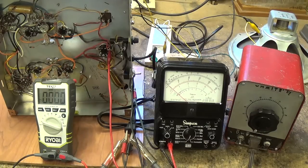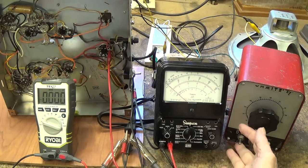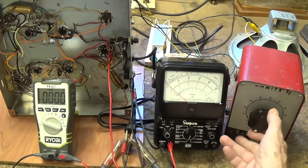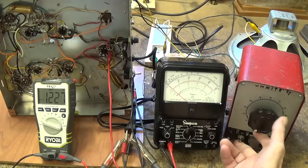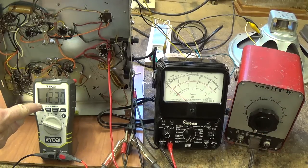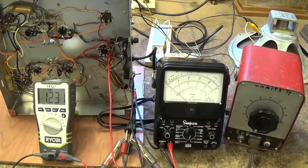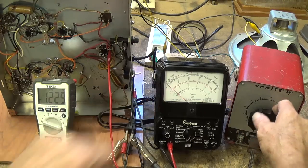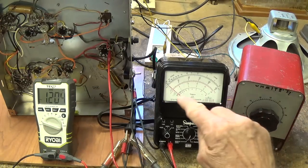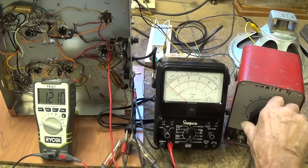Okay, here we are set up with a 5U4. We'll turn the variac down to zero. Turn it on. Once again, we get a little over one volt. Let's watch the needle and see when it starts to deflect. This will show us the B-plus output from the rectifier.